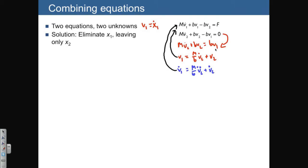We can plug these into the first equation, which I'll do over to the left here. So m times v1 dot, which is the quantity you see over here, minus bv2 dot is equal to f.